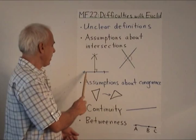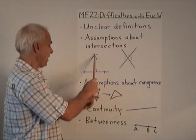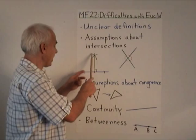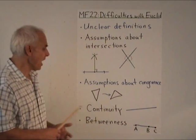Here's another example: when he constructs a perpendicular to a line through a point, he first uses his compass to get these two points, and then he draws two circles, and when those two circles intersect, we get a line. However, the problem is, again, that these two circles that we've drawn — how do we know that those two circles actually intersect? Euclid just assumes it.